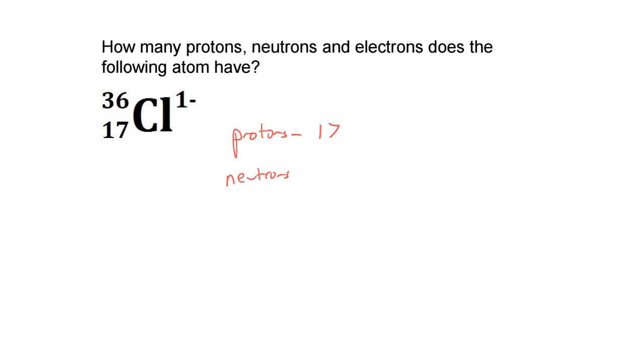Neutrons, well they need to add up to be 36 so I'm thinking 19. And then electrons. This ion has a negative charge so the electrons are outweighing the protons by 1 so it's going to have 18. It outweighs the protons by 1.